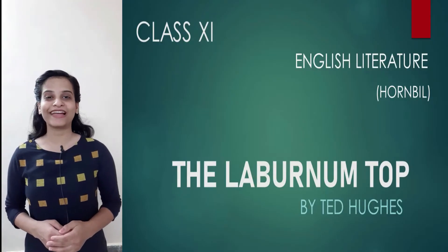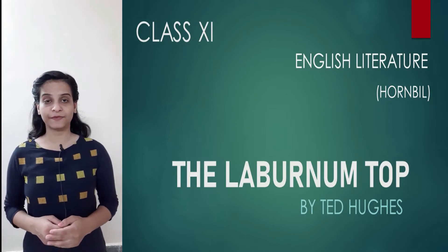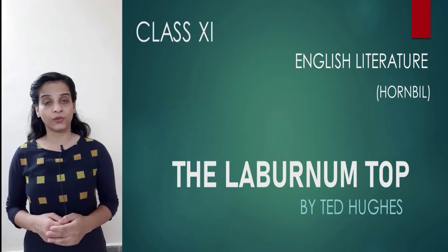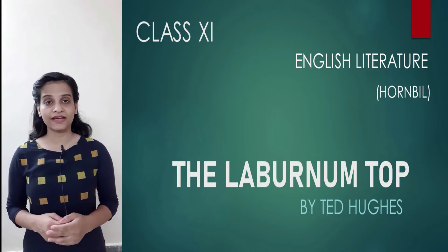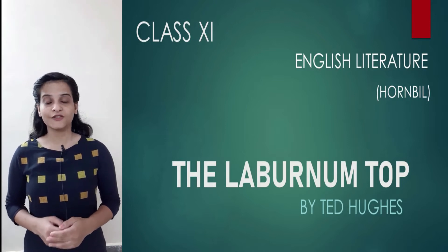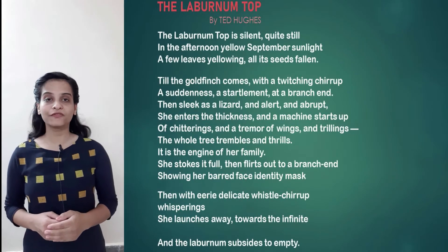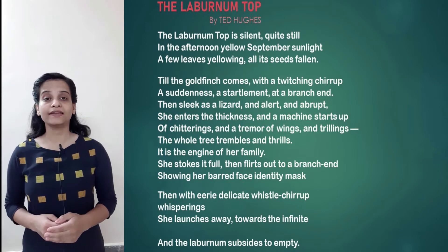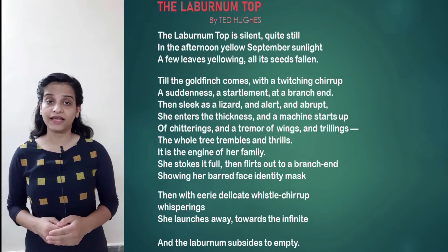Hi everyone and welcome back to our channel. In today's video we will be learning the line by line explanation of the poem 'The Laburnum Top' by Ted Hughes, followed by the exercise that we will be solving at the end. I will also be telling you about the poetic devices at the end of the explanation part. The theme of the poem is the mutual relationship between the laburnum tree and the goldfinch bird, and how it beautifully expresses our lives in general.